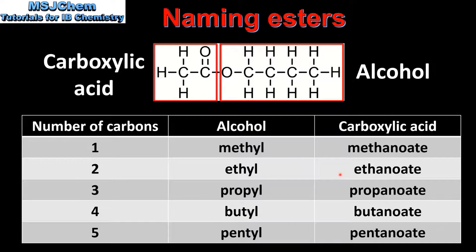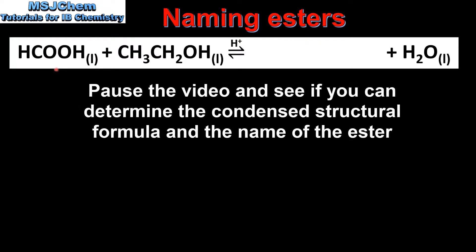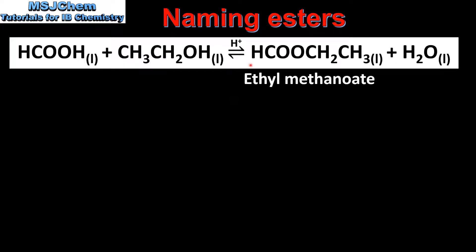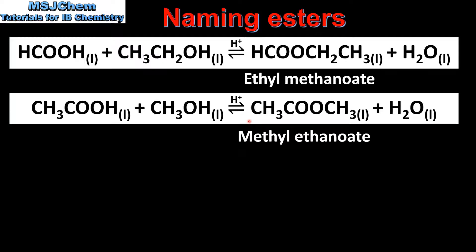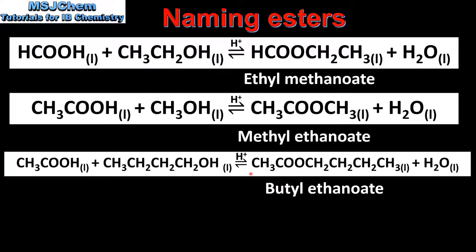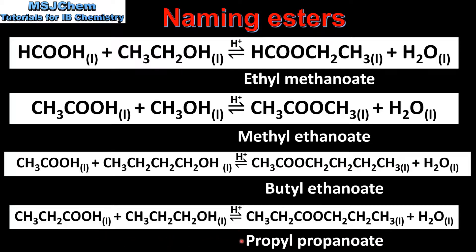In the next examples we'll be predicting the names of the esters formed in the reactions. In our first example we have a one-carbon carboxylic acid, which is methanoic acid, reacting with a two-carbon alcohol, which is ethanol, giving the ester ethyl methanoate. Next we have a two-carbon carboxylic acid reacting with a one-carbon alcohol, giving methyl ethanoate. Next is the reaction between a two-carbon carboxylic acid and a four-carbon alcohol, giving butyl ethanoate. Finally, the reaction between a three-carbon carboxylic acid and a three-carbon alcohol gives propyl propanoate.